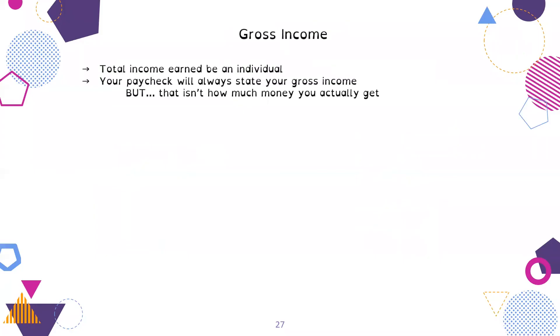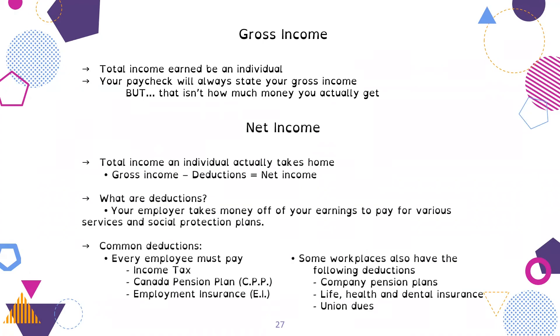Lesson number three, gross and net pay. Gross income is the total income earned by an individual. Your paycheck will always state your gross income, but that isn't how much money you will actually get. Net income is the total income an individual actually takes home. This is your gross income take away your deductions, which equals your net income, or often people call it your take home pay.